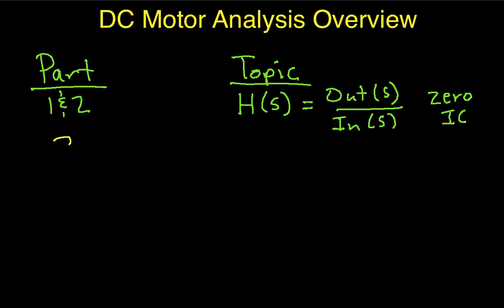Part 3 is finding the impulse response from the transfer function. So basically the impulse response is the inverse Laplace transform of the transfer function. So in part 3 we're going to take the inverse Laplace transform of the transfer function and get the impulse response.